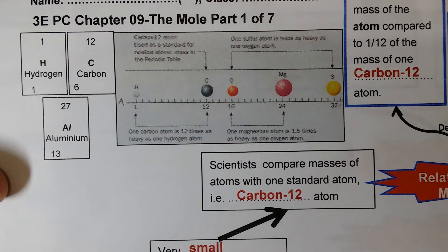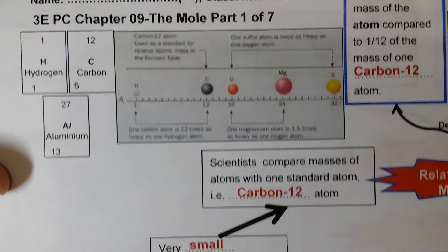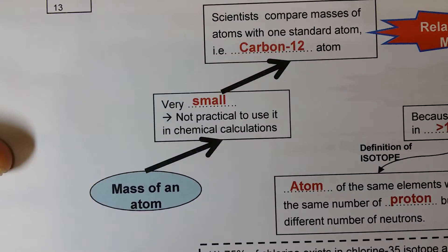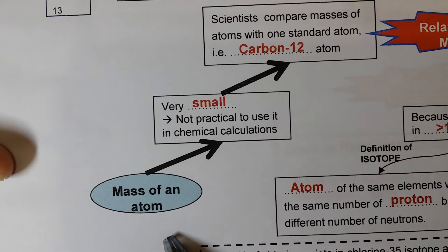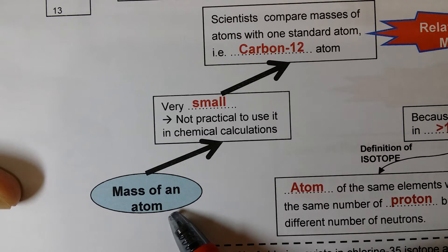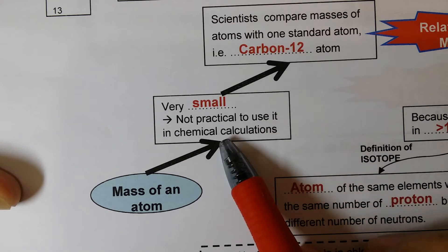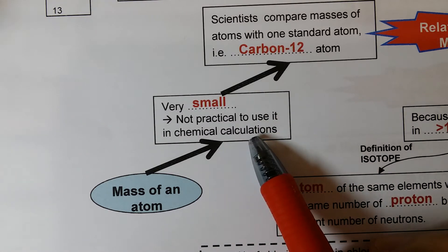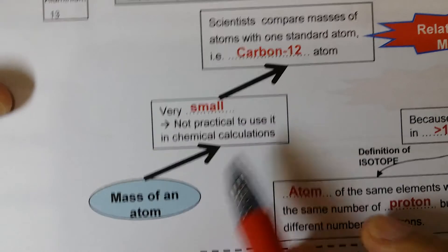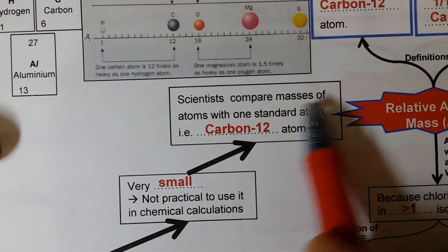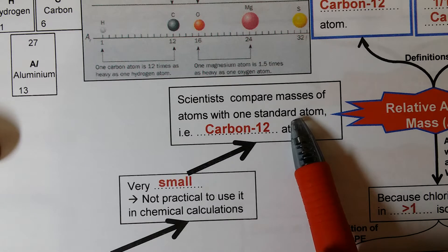This is the mind map for the mole concept chapter. First, we start out with the mass of an atom. An atom is very small, so the mass of an atom is going to be very small as well. It is not practical to use it in chemical calculations. So instead, scientists compare the mass of atoms with one standard atom.